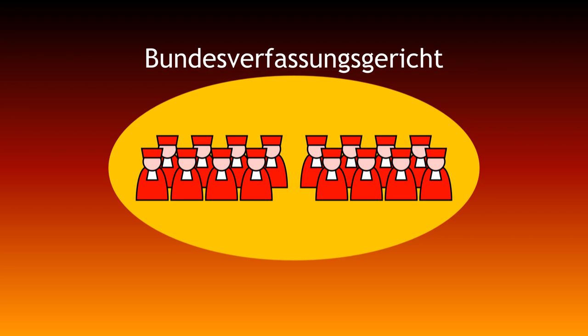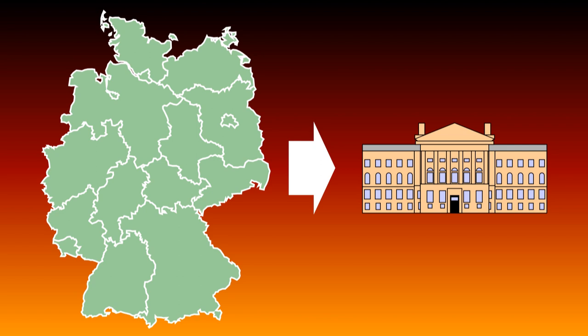The Bundesrat is a legislative body made up of delegates from the 16 state assemblies. Each state has between three and six votes, depending on their population.